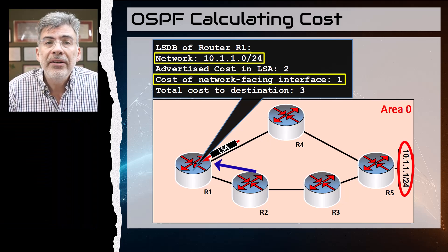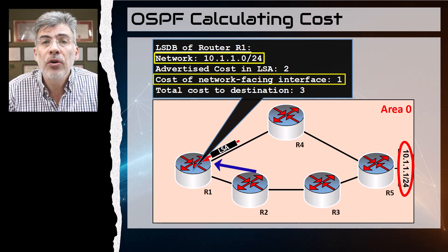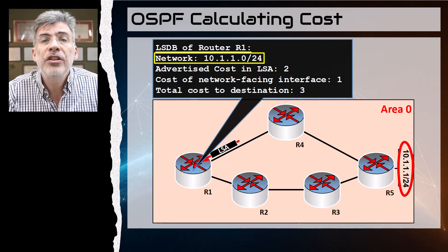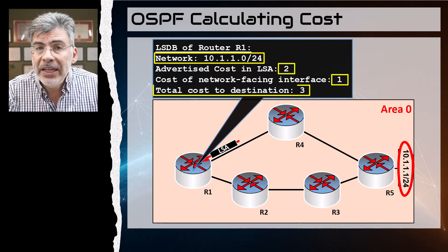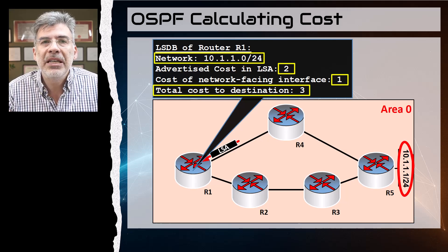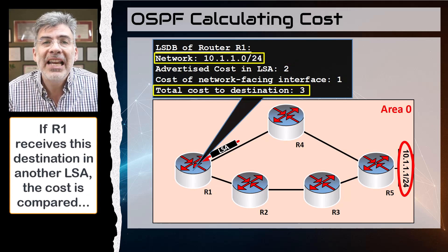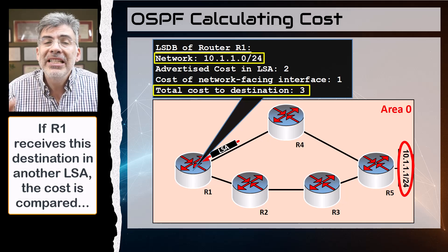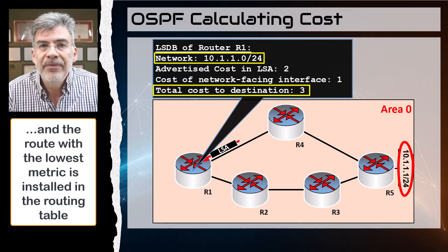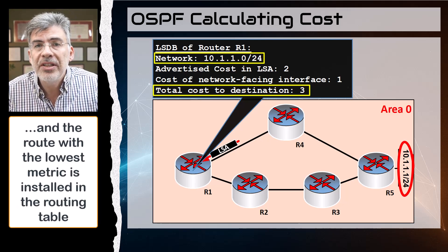And finally, it calculates the total cost for that destination to be two plus one, three, and puts that in its own LSDB. Again, that cost is compared to any other LSAs that may have been received which contain that same destination network, and the one with the lowest cost is placed in the routing table.